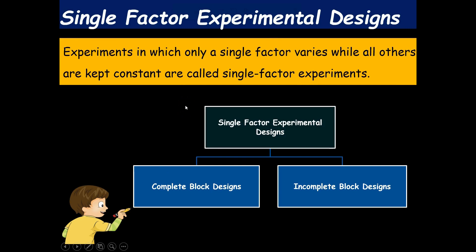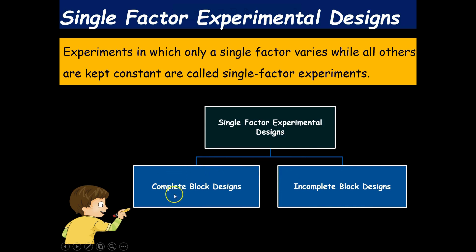Before the next series, a brief idea of what we will study: we will start with single factor experimental designs. These are experiments in which only one single factor varies while all others are kept constant. Single factor experiments are further categorized into two categories: complete block design and incomplete block design. Complete block designs are used for a small number of treatments, while incomplete block design is used to evaluate a large number of treatments.